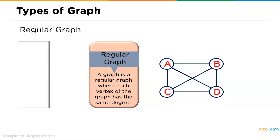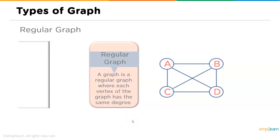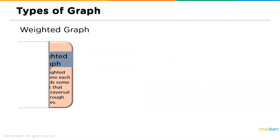Followed by directed graphs we have the regular graph: a graph is a regular graph where each vertex has the same degree. For example, the degree of A is 3, the degree of B is also 3, the degree of D is 3, and similarly the degree of C is also 3 — all vertices have the same degree.